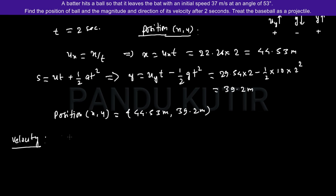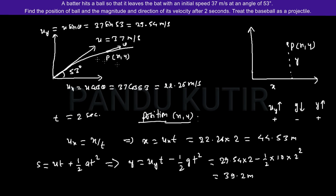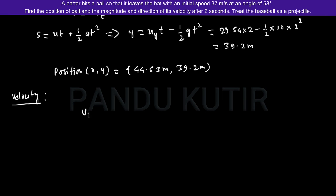To calculate the velocity we have to take vertical and horizontal components. Since there is no acceleration in horizontal direction in projectile motion, velocity remains constant in this direction. At point P, its horizontal component is Vx and vertical component is Vy. Here Vx equals Ux since the horizontal component remains same, equal to 22.26 meters per second.